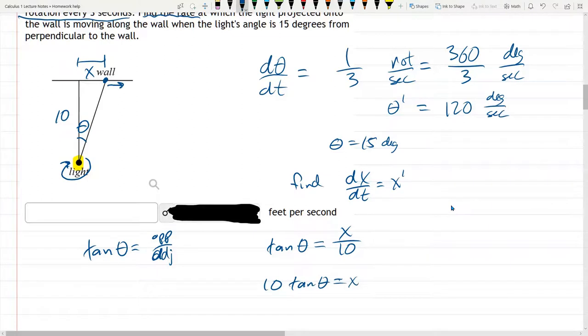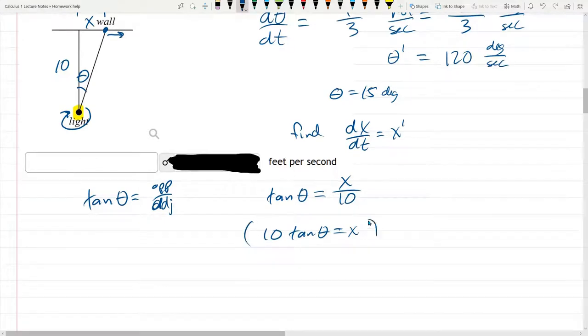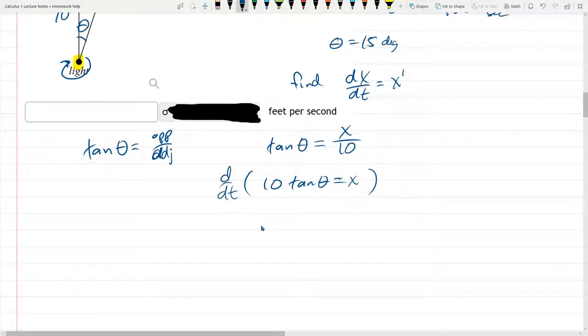We know theta, we know theta prime. We can now take our derivative of the equation we wrote down, and we'll be solving for x prime. Let's go ahead and do a t derivative. Every related rates problem I give you should be a t derivative. So we have 10 constant. Derivative tangent is secant squared theta.